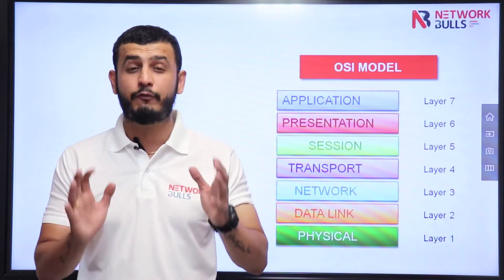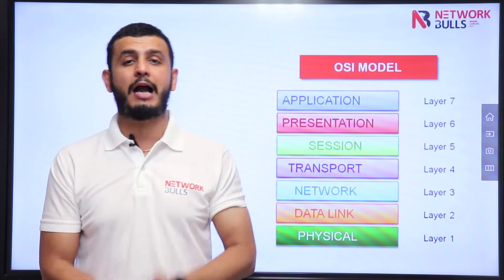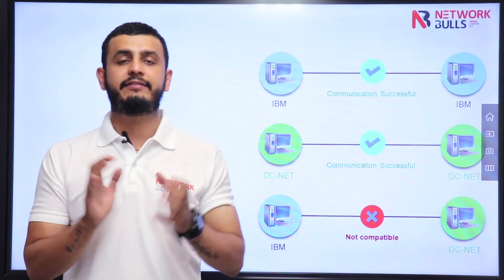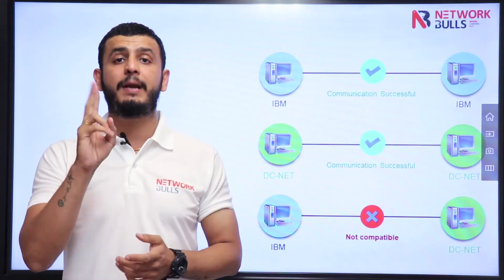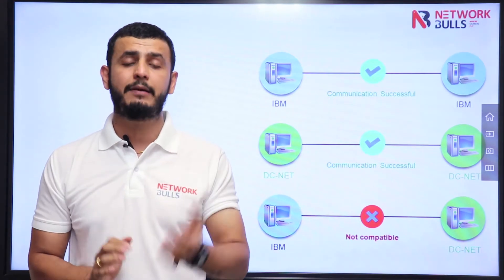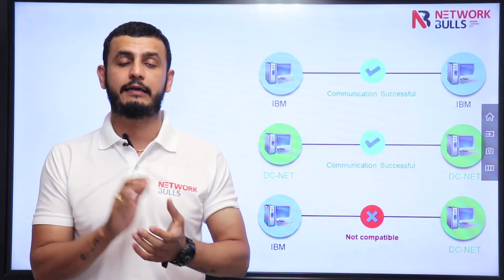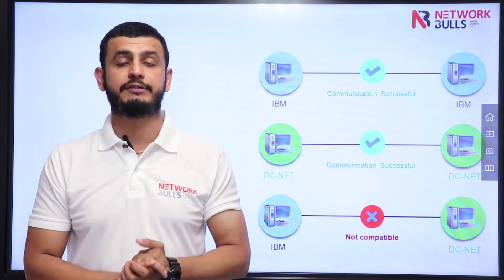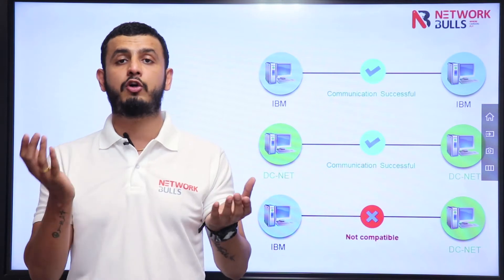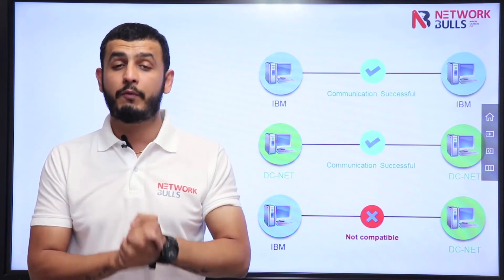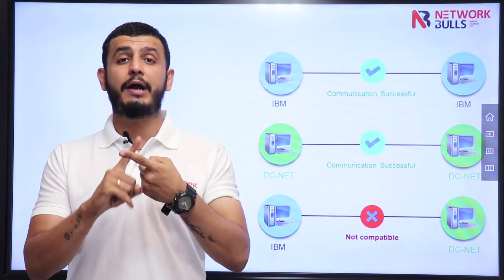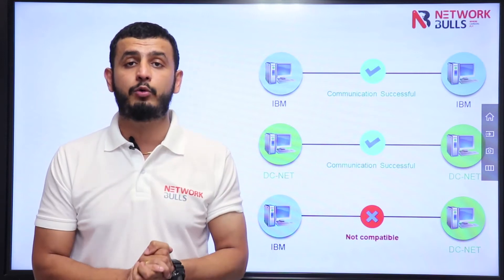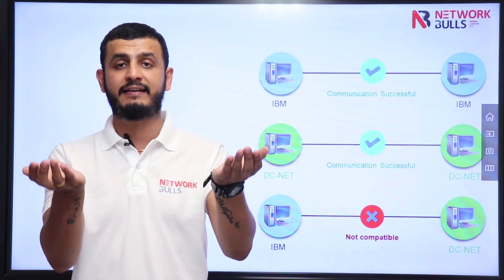To make you understand the need of OSI model, let me take you back to the 1980s. In the 1980s, there were two big vendors — one was IBM, the other one was DCnet. IBM computers were able to communicate with IBM computers, and DCnet computers were able to communicate with DCnet computers. What was the problem? There was no interoperability, meaning IBM computers cannot communicate with DCnet computers.